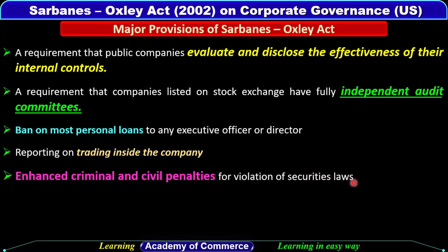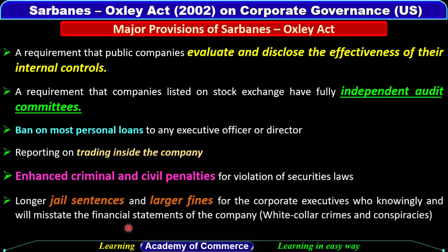The Act provides for enhanced criminal and civil penalties for violation of securities law. If companies violate securities law, criminal and civil penalties have been enhanced. There are longer jail sentences and larger fines for corporate executives who knowingly and willfully misstate the financial statements of the company. These are called white-collar crimes — where executives intentionally make misstatements in financial statements, due to which the company's true financial position is not disclosed.